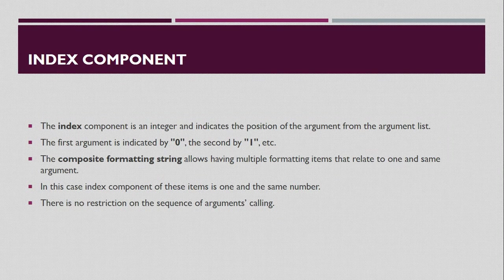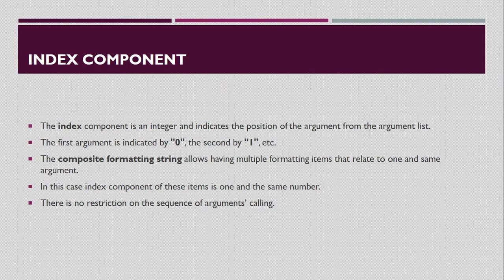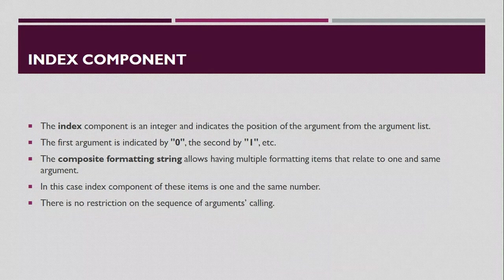The formatting item syntax uses opening and closing curly braces, within which you specify the index, and optionally the alignment and formatting string. The alignment should be separated by a comma from the index, and the formatting should be separated from the alignment and index by a colon. The index component is an integer indicating the position of the argument in the argument list; the first argument is index 0, the second is index 1. The formatting string allows multiple formatting items referring to one or more arguments, and there is no restriction on the sequence — you can have an unlimited number of arguments.